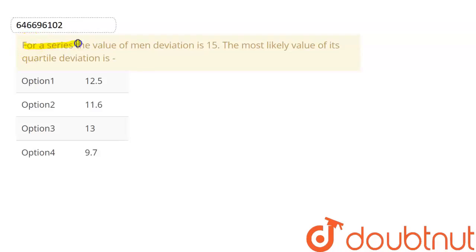For a series, the value of mean deviation is 15. The most likely value of its quartile deviation is. So here the question is to find the quartile deviation. Let's solve that. First, there is mean deviation.